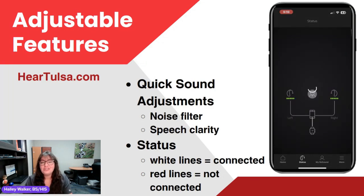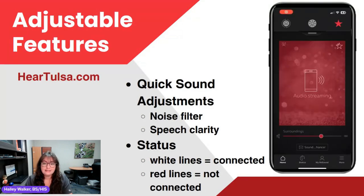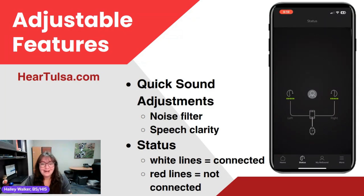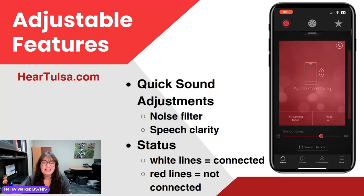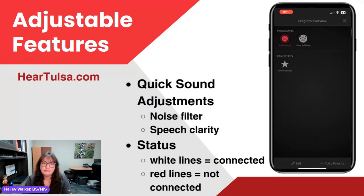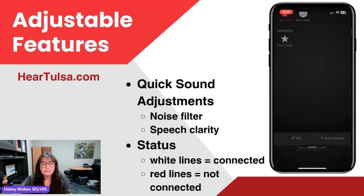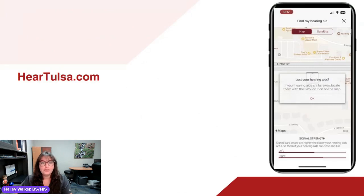That's all on the home page. Our next tab over is status. Status is going to show us what's connected and how much battery is left. White lines from your phone to your hearing aids show you're connected. If you see red lines or any red on that page, something's not connected or something's going wrong. We can see the names of those programs as well. If we pull down on that bar underneath the programs, we can see that overview, but we can't adjust programs from that menu.